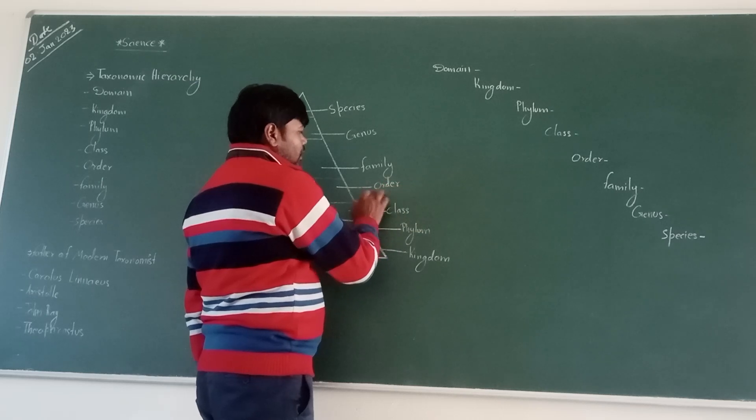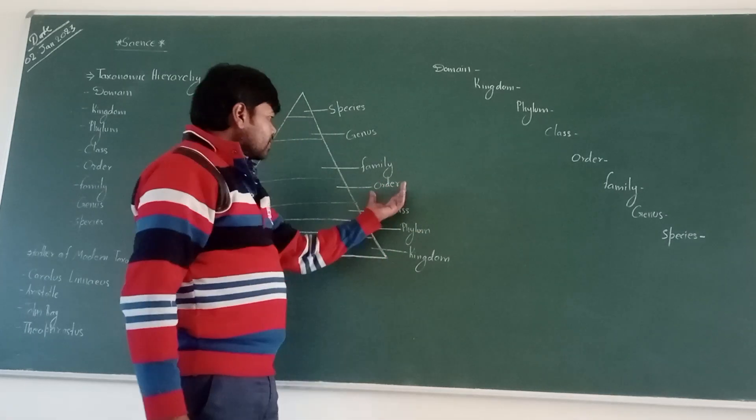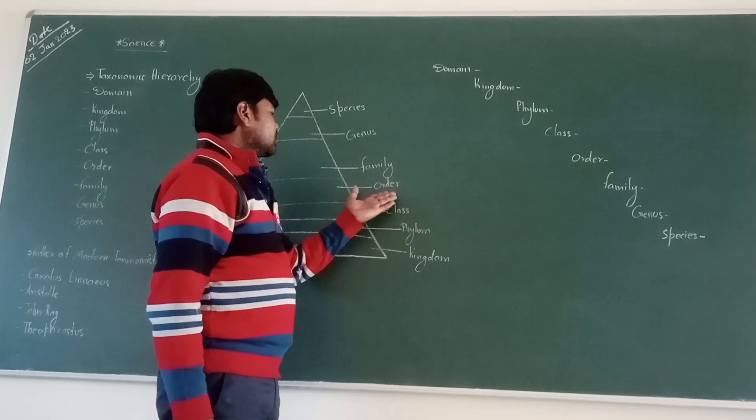Next, order. Order is the special features that plant and animal are classified.